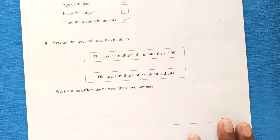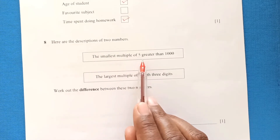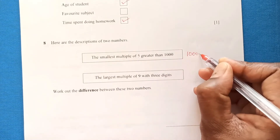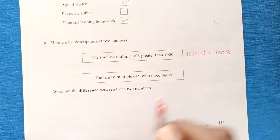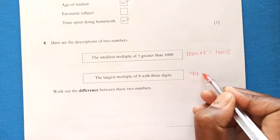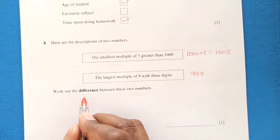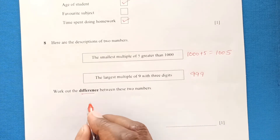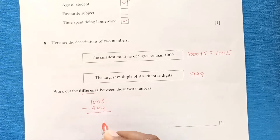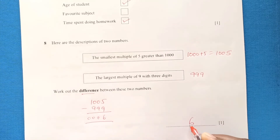Question eight: find two numbers — the smallest multiple of five greater than 1000, which is 1005, and the largest three-digit multiple of nine, which is 999 (since 1000 would be four digits). Work out the difference between these two numbers: 1005 minus 999 equals 6.